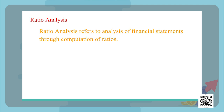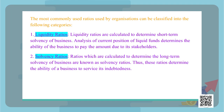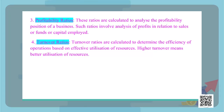Then we have ratio analysis, which refers to the analysis of financial statements through computation of various ratios. The most commonly used ratios are: liquidity ratios, calculated to determine short-term solvency; solvency ratios, calculated to determine long-term solvency; profitability ratios, which analyze profitability in relation to sales, funds, or capital employed; and turnover ratios, calculated to determine the efficiency of operations based on effective utilization of resources. Higher turnover means better utilization of employed resources.